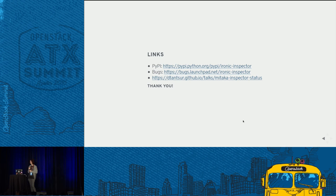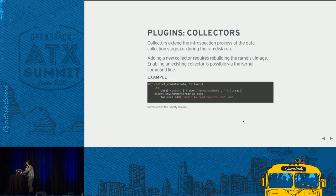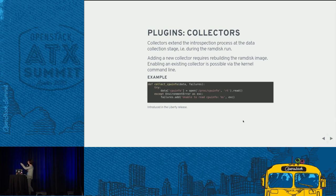Q: Can I put my own tests in Ironic Inspector — can I extend it with custom inspector functions? A: Yes. This is what the plugin system is for. On the RAM disk side, benchmarks are implemented as a separate plugin, and you can do the same. You build a Python snippet into the IPA RAM disk and it will do everything you want.